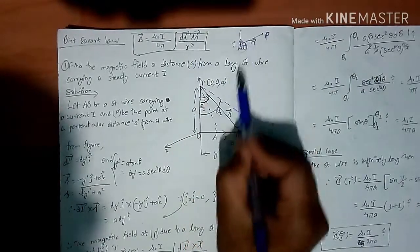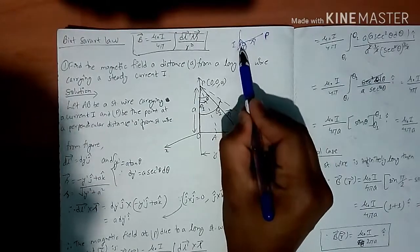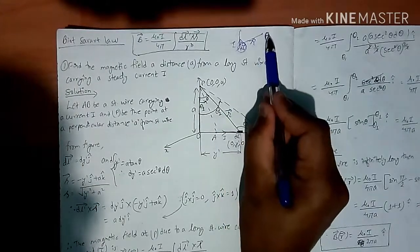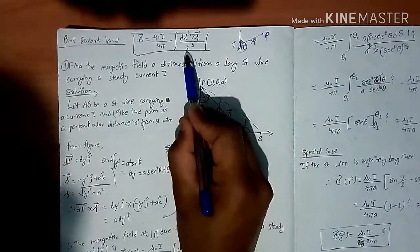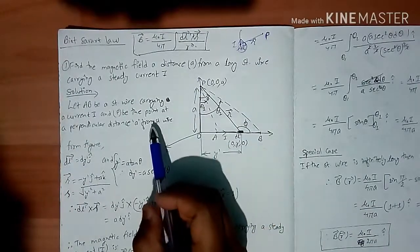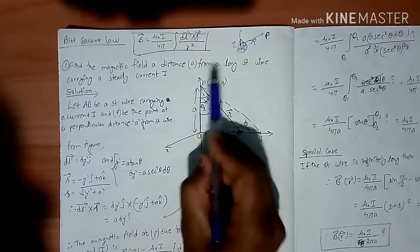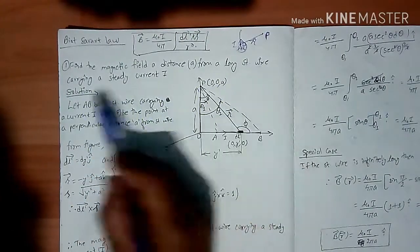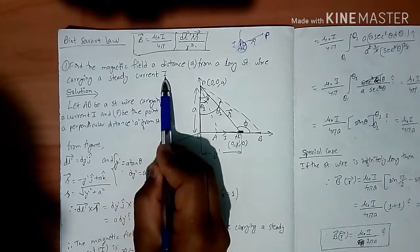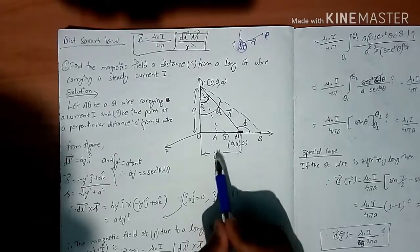Cross this infinite symbol length wire, this is the distance R by R cube. This is the main formula, this is the problem. Find the magnetic field at a distance a from a long straight wire carrying a steady current. The wire, this is the I current flow.